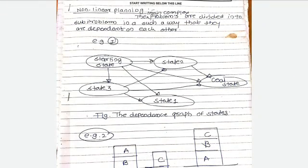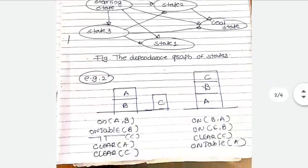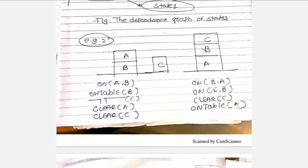Let's take another example. The starting state depends on state 1, state 2, and state 3, and also depends on the goal state. State 3 is dependent on state 2, state 1, and the goal state. In this way, all state 1, state 2, and state 3 are dependent on each other to reach the destination or goal node. So keep in mind: in non-linear planning, the planning is done in such a way that the tasks are dependent on each other.